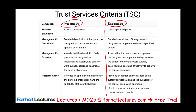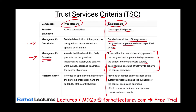A Type 2 Report will cover a period of time. In a Type 2 Report, the management description — management makes a claim or shows us a detailed description of the system as designed and implemented over a specified period. Management asserts that the description fairly presents the designed and implemented system over the period, and that controls were suitably designed and operated effectively to achieve the control objective.